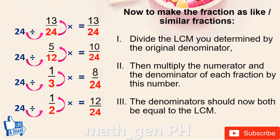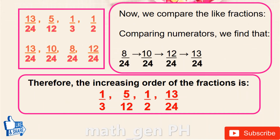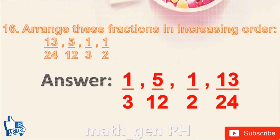To convert to like fractions with denominator 24: 13/24 stays 13/24; 5/12 becomes 10/24; 1/3 becomes 8/24; 1/2 becomes 12/24. Comparing numerators: 8/24 < 10/24 < 12/24 < 13/24. Therefore the increasing order is: 1/3, 5/12, 1/2, 13/24. Answer: 1/3, 5/12, 1/2, 13/24.